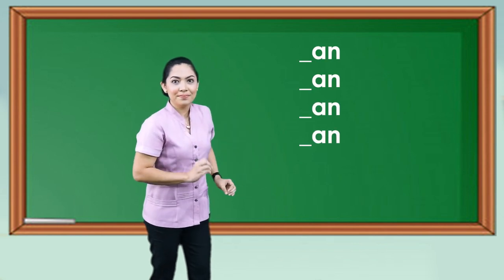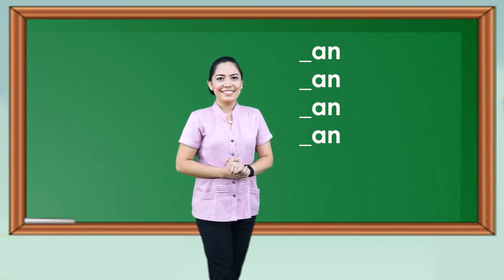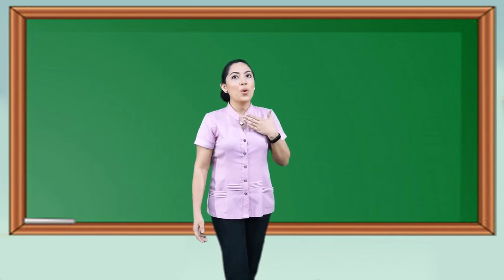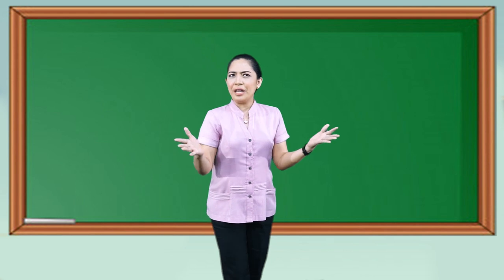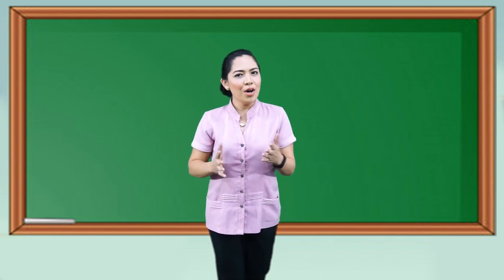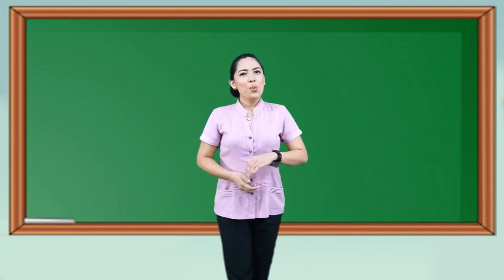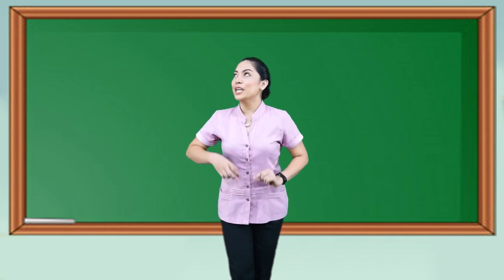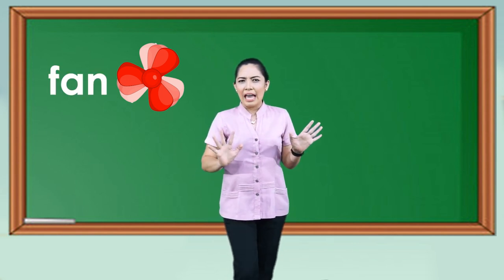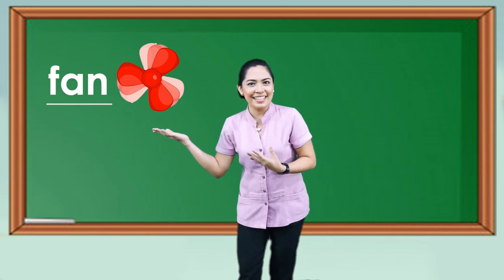This time, write on your paper the letters 'an' vertically, or in a straight line. Write it four times. Are you done? That's great. Now I am going to flash a picture. Since you already have written 'an', you will just write the missing beginning sound on the space before 'an' to complete the word. Let me give you an example. What is the name of this picture? Correct — it is a fan. So we add F to 'an' to make it 'fan'. Great job!